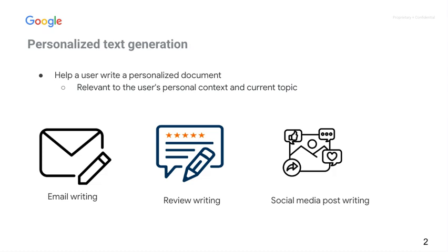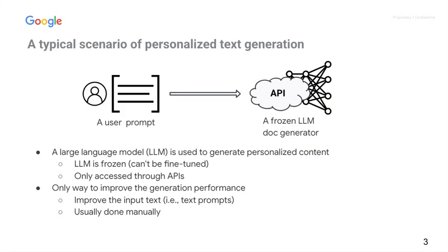It has wide applications like email writing, review writing, and social media post writing. In this work, we focus on a typical scenario of personalized text generation, where a large language model is used to generate personalized content. This LLM is frozen and can only be accessed through APIs.